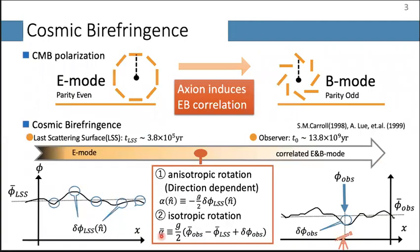Experimentally, we need to use some source of polarized photons. We can use the CMB as a polarized photon source. The CMB has two kinds of polarization modes: E-mode polarization and B-mode polarization. The axion induces EB correlation in these modes. In this paper, we simply neglect the small primordial B-mode from gravitational waves. This polarization rotation and EB correlation is called cosmic birefringence.